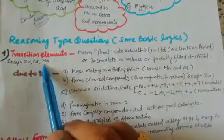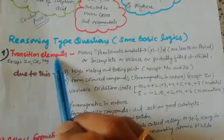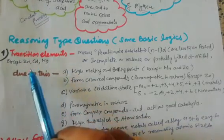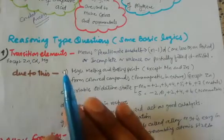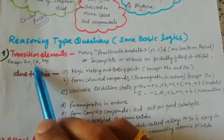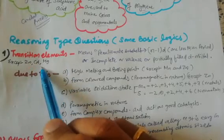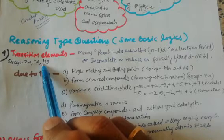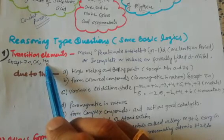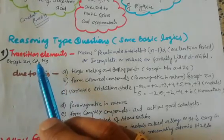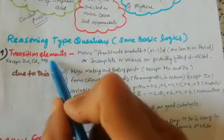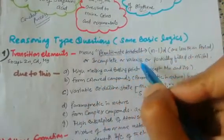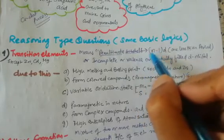Zinc, cadmium, and mercury are not called transition metals because their outermost shells are completely filled or paired, making them diamagnetic in nature. These elements do not have incomplete or partially filled d shells, which is why they are not classified as transition elements. Transition elements must have a penultimate subshell with the configuration (n-1)d.